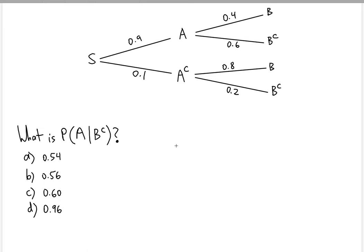We're given a tree diagram with respective individual probabilities of events A, A complement, and then given A: B complement, B, B complement, B, and A complement respectively. We're asked to find the conditional probability: given B complement, what is the probability of A?